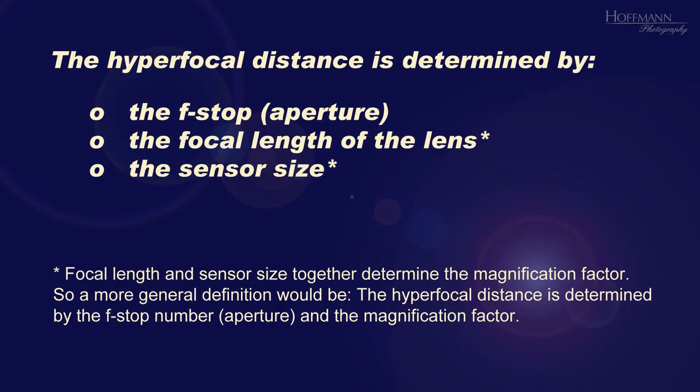Now, what determines the hyperfocal distance? There are three factors: the f-stop or the diameter of the aperture, the focal length of the lens, and the film or sensor size. There is some math involved to determine the hyperfocal distance from these three parameters. Unfortunately you can't do the math in your head.